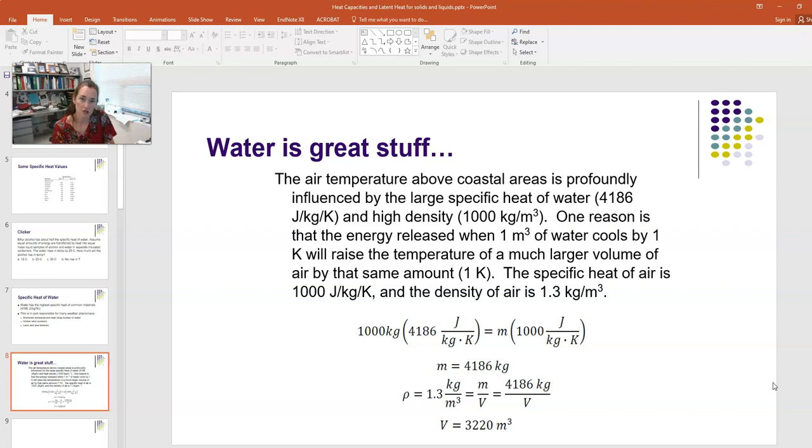So one cubic meter of water can heat up over 3000 cubic meters of air. This is one of the main reasons that temperatures and weather are so moderate right next to the seashore. I hope this simple example introduced you to some ideas for heat capacities and specific heats. I'll see you in class.